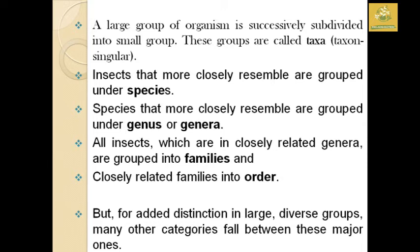Insects that most closely resemble each other are grouped into a particular form known as a species. Species that more closely resemble each other are grouped under a genus or genera. All insects with closely related genera are grouped into families, and closely related families are grouped into orders. Additional categories fall between these major ones for large, diverse groups.